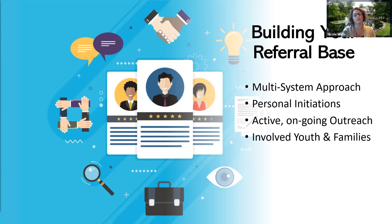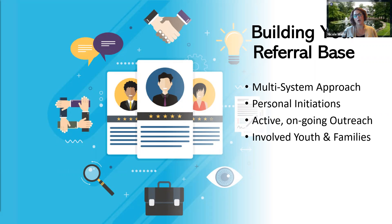In order to effectively recruit, we need to look at it from a multi-system lens and use a team approach. The population from which potential participants are drawn is really big, so we have to cast a wide net. You can use a multi-agency or multi-system approach — reaching outside the lines of service to include mental health, behavioral health, juvenile probation, family centers, child welfare, faith-based organizations, local community centers, daycares, and schools.